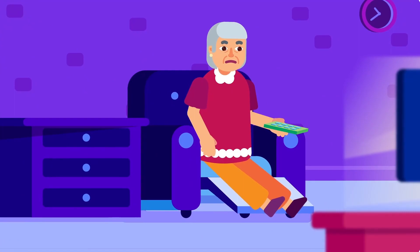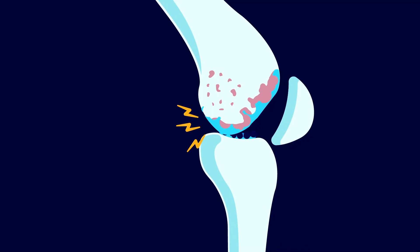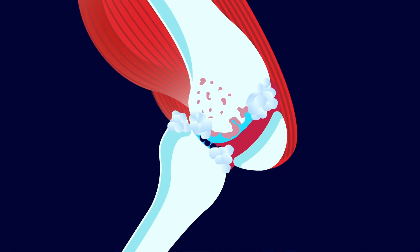Symptoms include pain, stiffness and restricted movement, crepitus — the sensation of grinding or creaking when the affected joint moves — bony swelling, excess fluid, joint instability, and weakness and thinning of the thigh muscle.